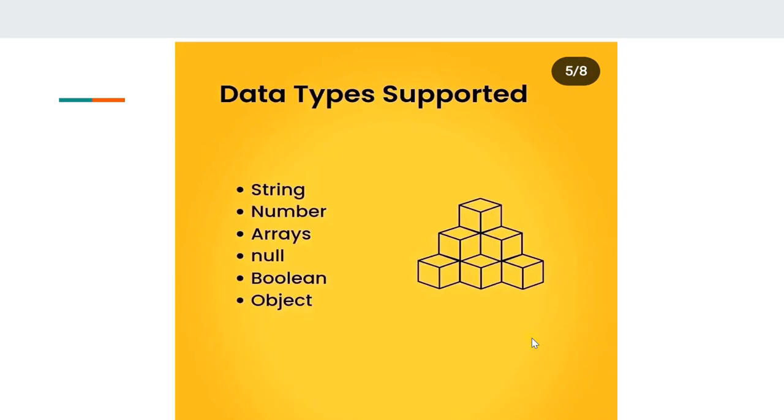Data types supported by JSON: string, number, arrays, null, boolean, and object.